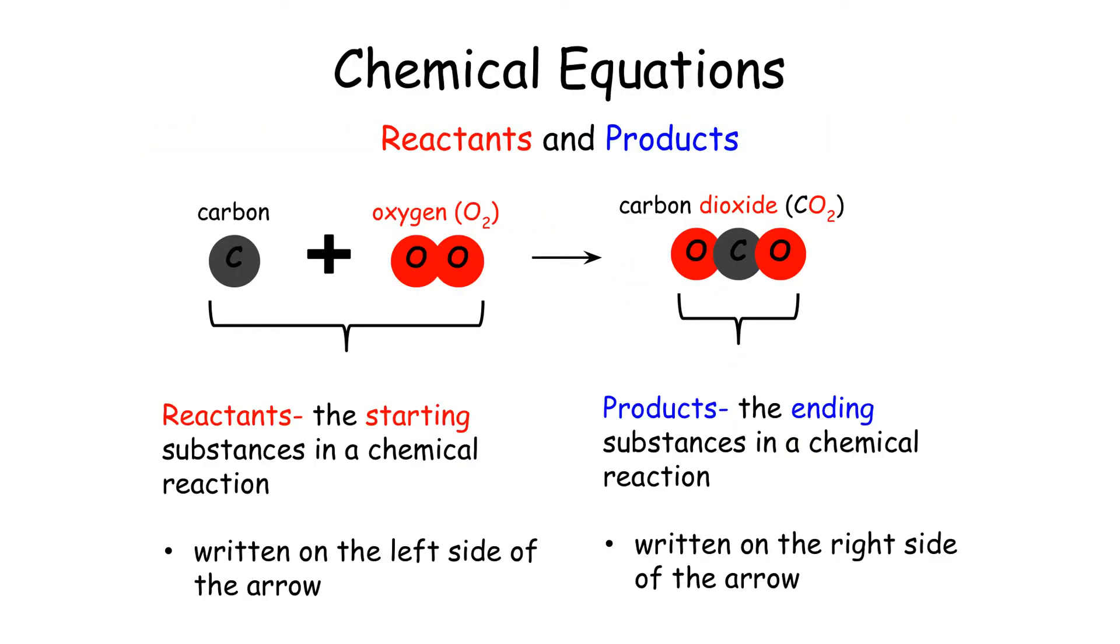So in a chemical equation, there are reactants and products. The reactants are the starting substances in a chemical reaction. They are written on the left side of the arrow. Products are the ending substances of a chemical reaction. They are written on the right side of the arrow.